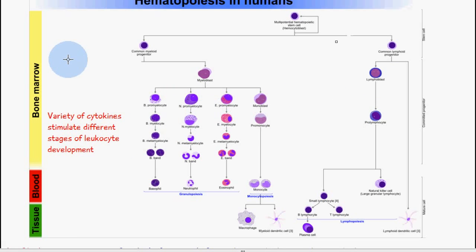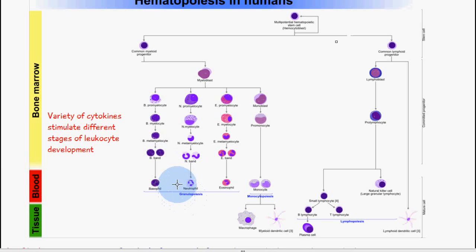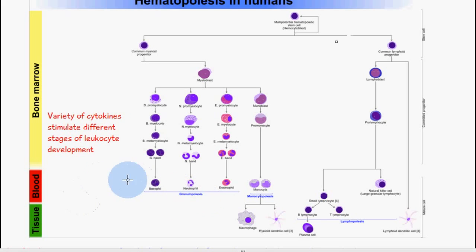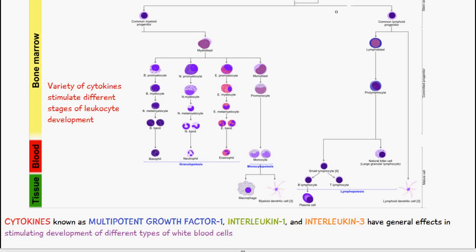A variety of cytokines stimulate different stages of leukocyte development. Some of these processes occur in the bone marrow, some in the blood, and some in the tissue. The final stages of granulopoiesis — where the basophilic, neutrophilic, and eosinophilic bands form the basophil, neutrophil, and eosinophil — occur in the blood.